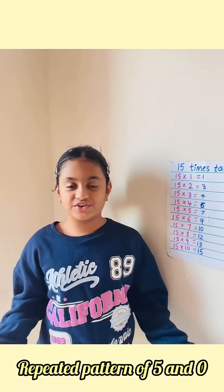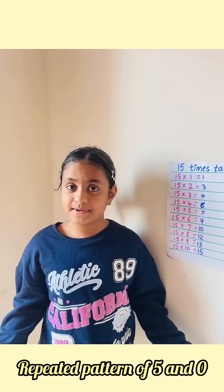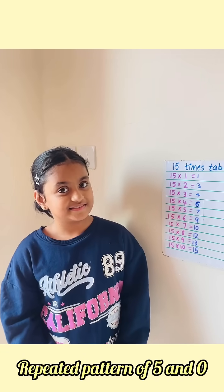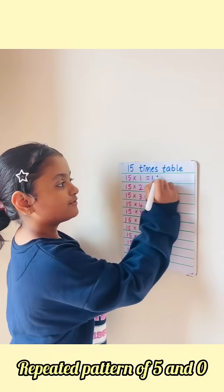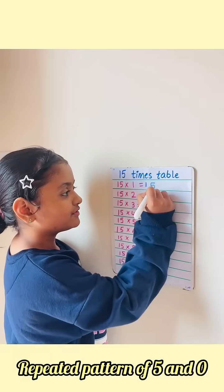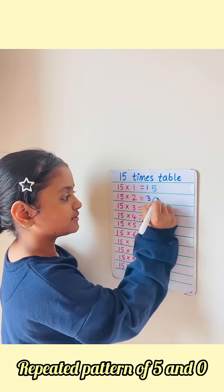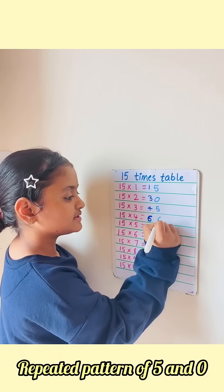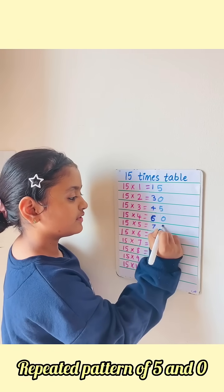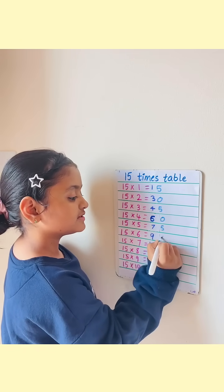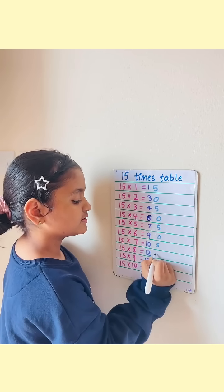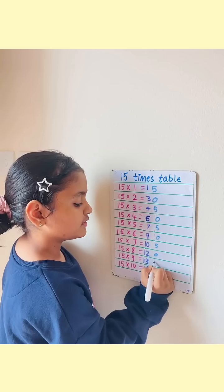Step 3. We have to follow the repeating pattern of 5 and 0. Like 5, 0, 5, 0, 5, 0, 5, 0.